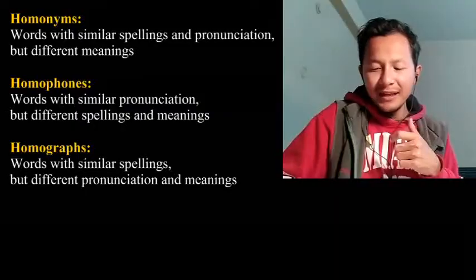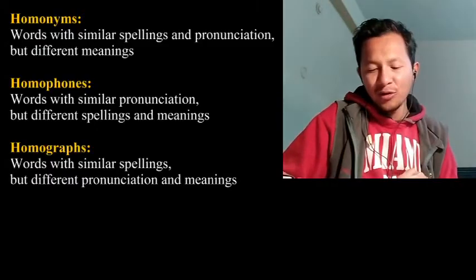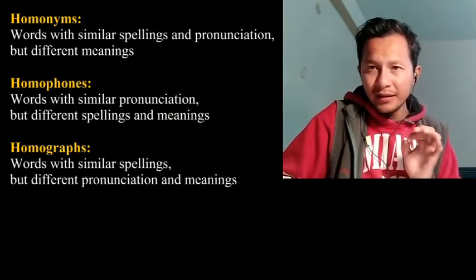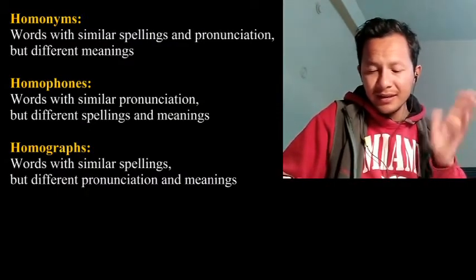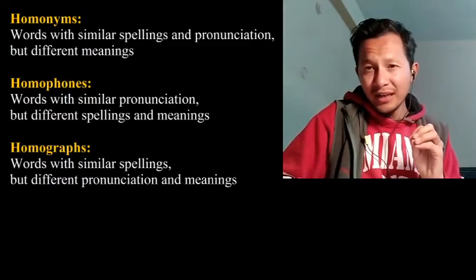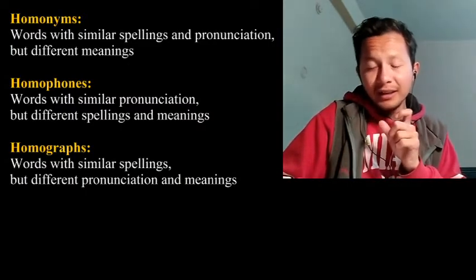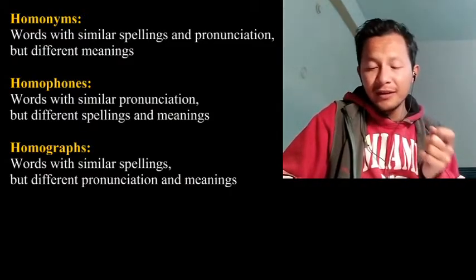Homophones mein kya hai: pronunciation same hogi but spelling alag ho sakti hai. Jaisa D-I-E and D-Y-E. Die — D-I-E — yaani kya hai, maut hona, marna. D-Y-E — rang karna. So yeah. And Homographs are jis mein spelling same hongi lekin pronunciation alag ho. Jaisa 'Minute' — minute yaani 60 seconds. Or doosra kya — minute yaani sookshm, bahut chhota. Spelling same M-I-N-U-T, but pronunciation bhi alag — minute, minute.